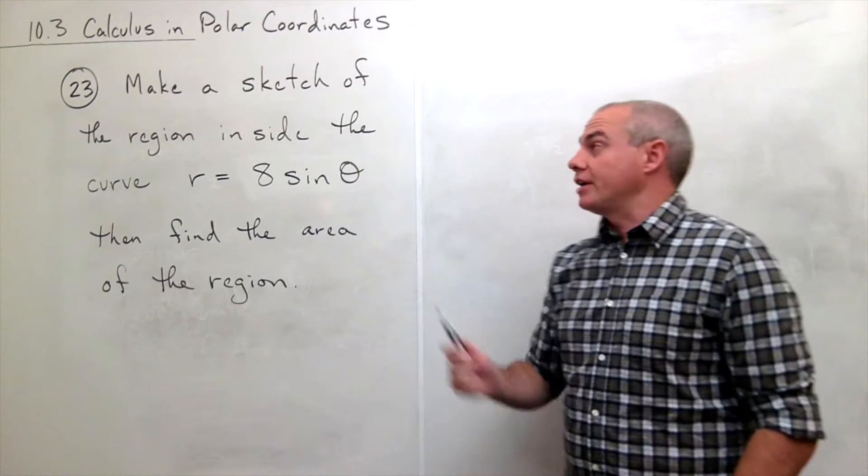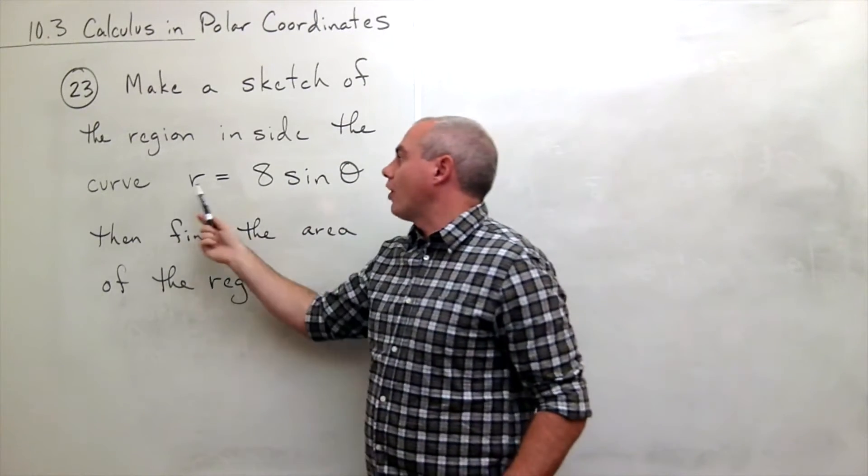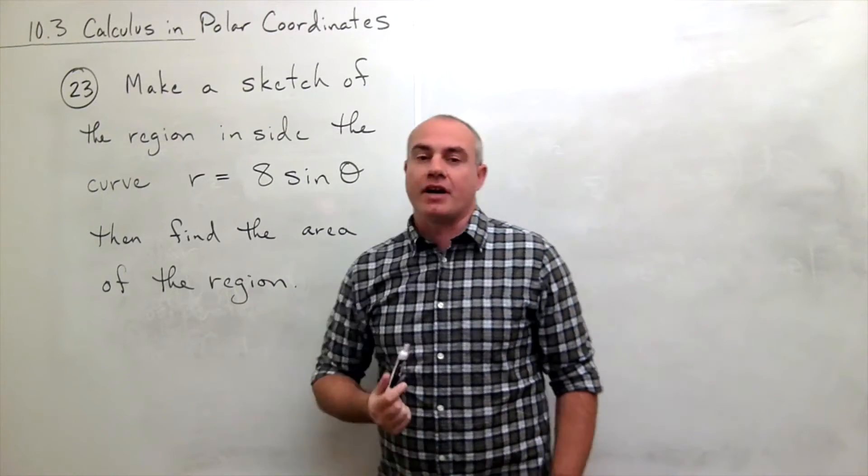In problem number 23 we'd like to make a sketch of the region inside the curve r equals 8 sine theta and then find the area of that region.